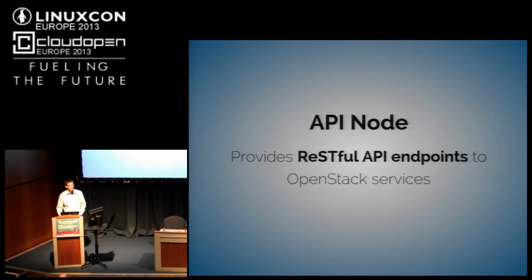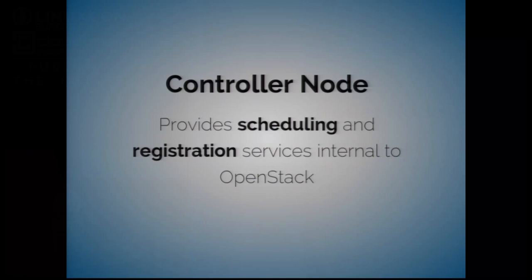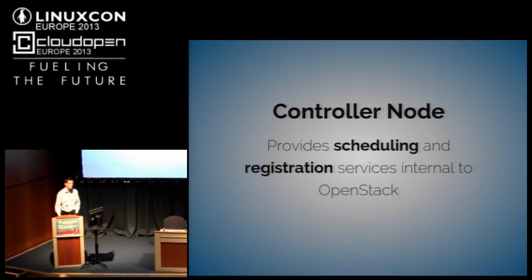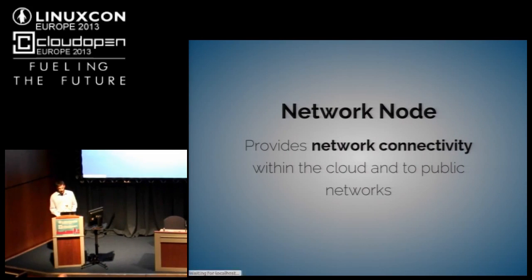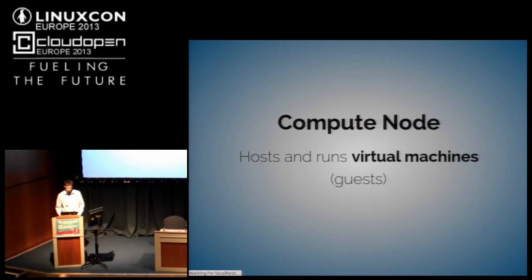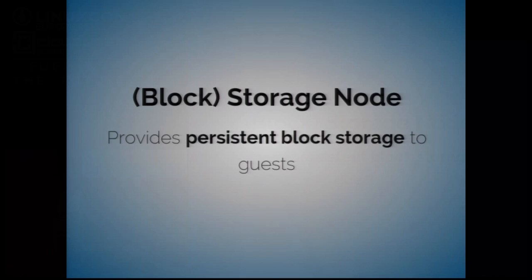We have the authentication node, which runs the OpenStack identity service Keystone, providing authentication and a service catalog. We have an API node providing RESTful API endpoints to OpenStack services. A controller node provides scheduling and registration services internal to OpenStack — for example, selecting which compute node a guest is scheduled to run on. The network node provides network connectivity within the cloud and to public external networks. And we have compute nodes — it's not unusual to have hundreds or thousands — which host and run virtual machines, or Nova guests.